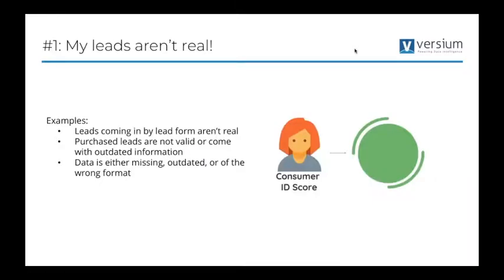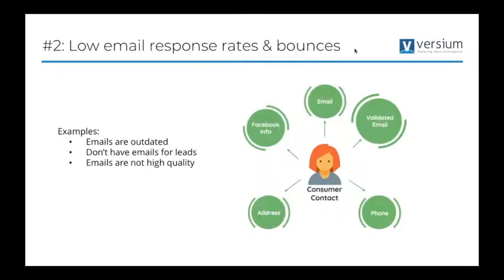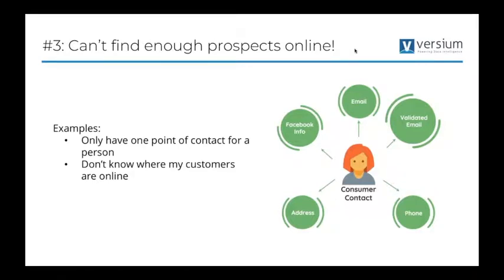Going back to that whole thing of those five different use cases. Number one, the leads weren't real. How about using a consumer ID score to know is Barney Rubble a real person? Most likely he's not. But can you imagine if you could use the API to just go in and tell you, this is actually a decent lead or is this garbage? Number two, your email responses are low and they're bouncing back. Imagine being able as a marketer to have that consumer contact information such as social media, validating their email, enriching their email if there are additional emails that can be found within our API, enriching it with a phone, making sure that their addresses are correct. That third use case, not being able to find enough prospects online. Imagine being able to have all that information right at your fingertips. It goes right back to number two of low emails, but the same thing. You can use that consumer contact API to enrich that to understand exactly more information at the consumer level.